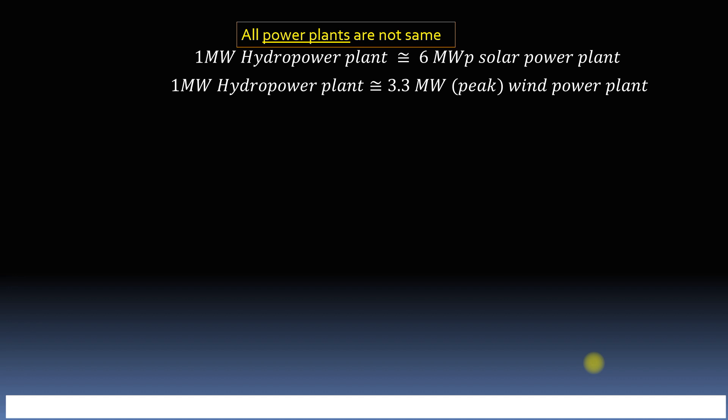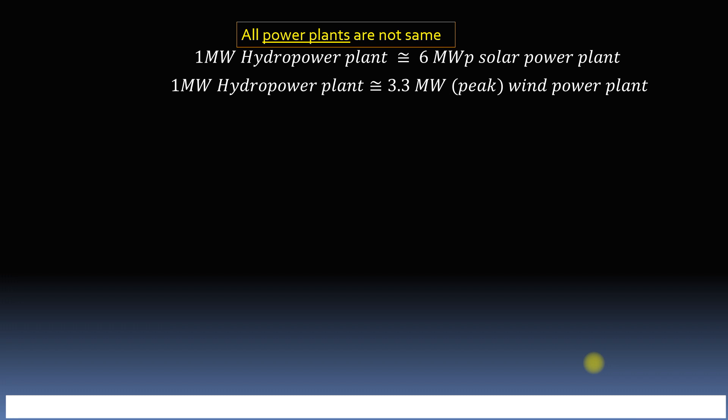During this exercise, we will also be seeing how one megawatt hydropower plant can be equivalent to 6 megawatt peak solar power plant or 3.3 megawatt peak wind power plant.